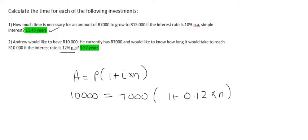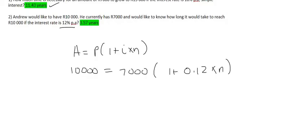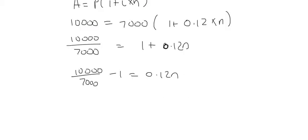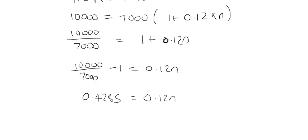As with the previous example, we first have to divide by 7,000, and then it's going to look like this. You then take the 1 over to the left-hand side. And then you can type that in on the calculator. And that's going to give you 0.4285 equals to 0.12N. And then you can divide by 0.12 and you'll get a final answer of 3.57 years.